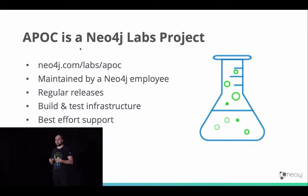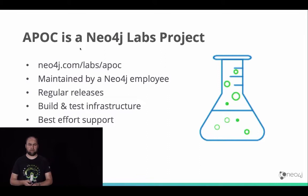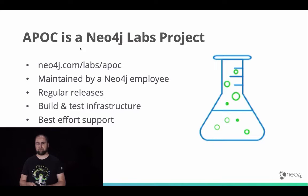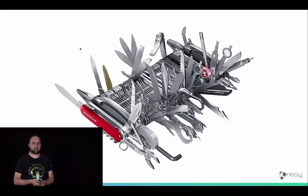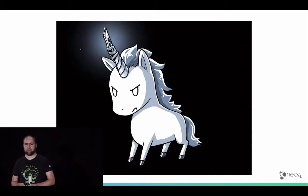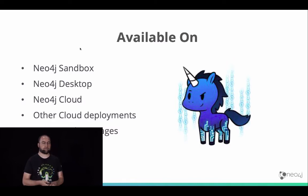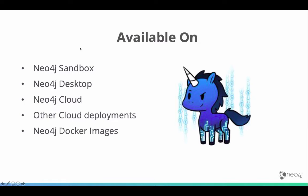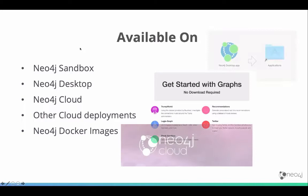We have regular releases — there was one just two weeks ago — and we run on appropriate test infrastructure. We can provide best-effort support through the community site, Slack, and GitHub issues. APOC is available in a lot of places: any Neo4j sandbox, Neo4j Desktop, Neo4j Cloud, other cloud deployments, and you can run Neo4j Docker images with APOC automatically added to them. No matter where you are, you get APOC pretty quickly and easily.